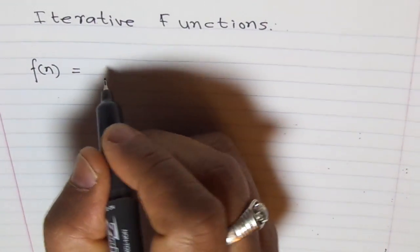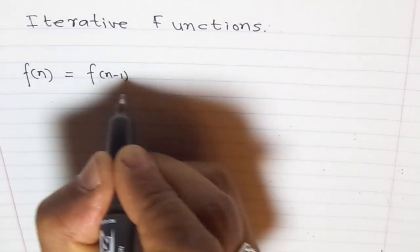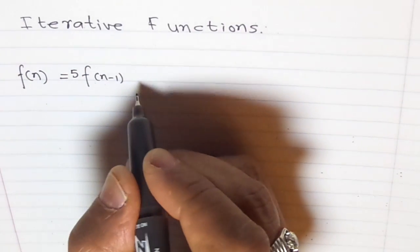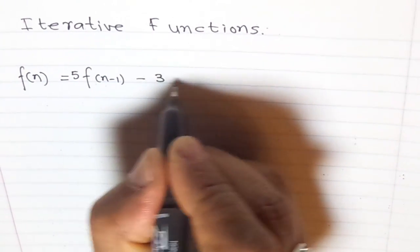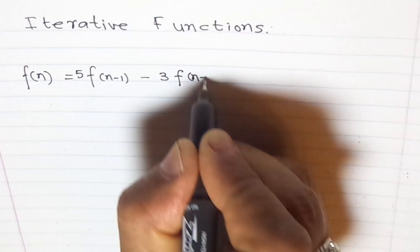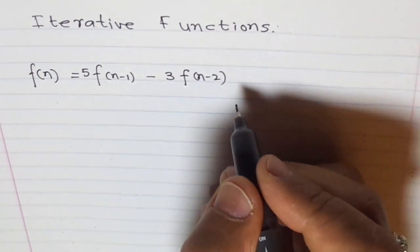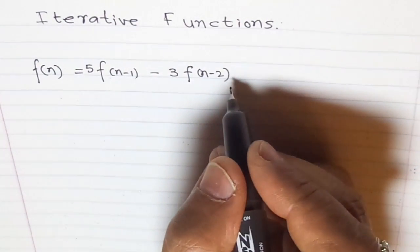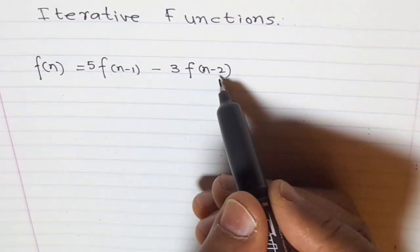f(n) equals 5 times f(n-1) minus 3 times f(n-2). So we are trying to generate a function from its previous values. In this case, previous two values.